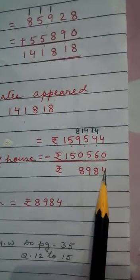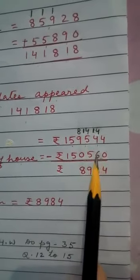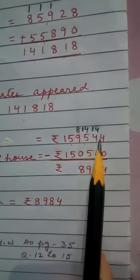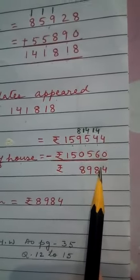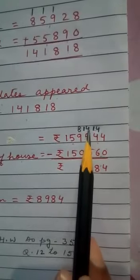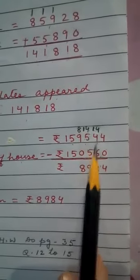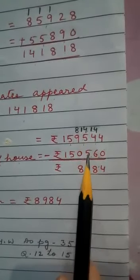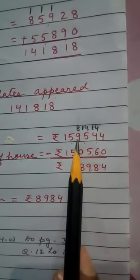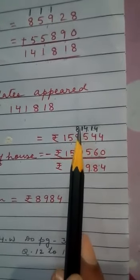So what you will get? 4 minus 0, 4. From 4, 6 will not go. We will take 1 here. So 14, 14 minus 6, 8. Now 1 we have taken. So 4 here. From 4, 5 will not go. We will take 1 here. So 14 minus 5, 9. 1 we have taken here. So 8. So 8 minus 0, 8.